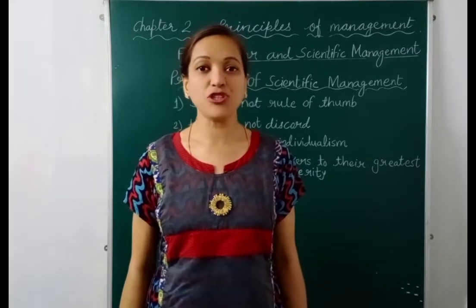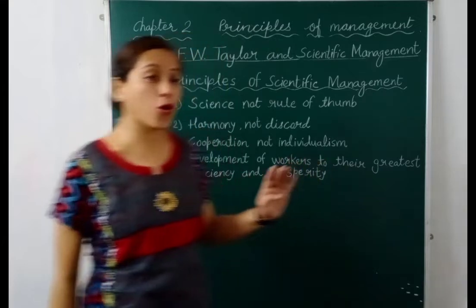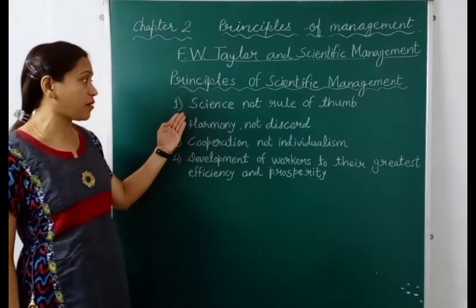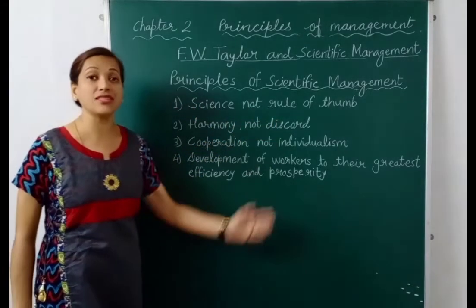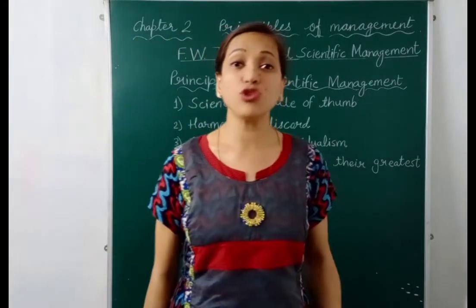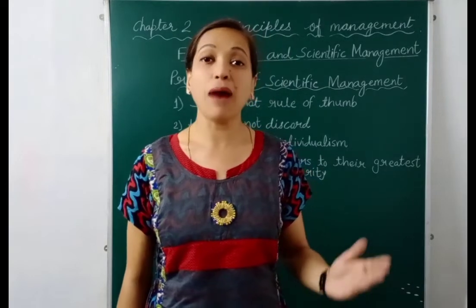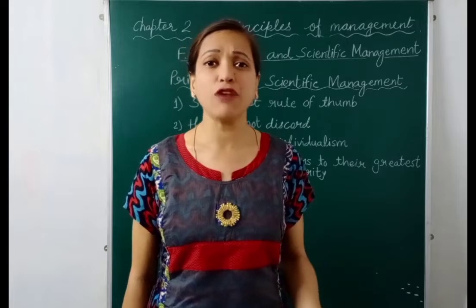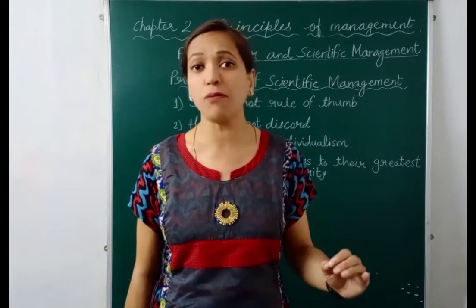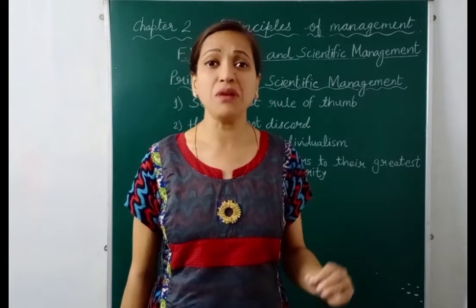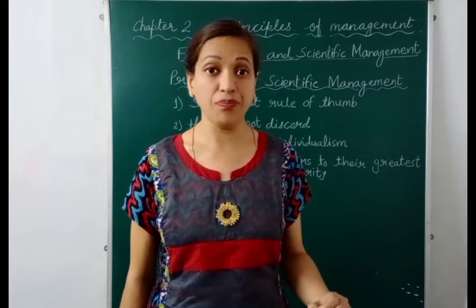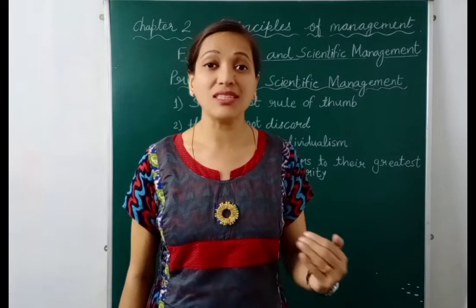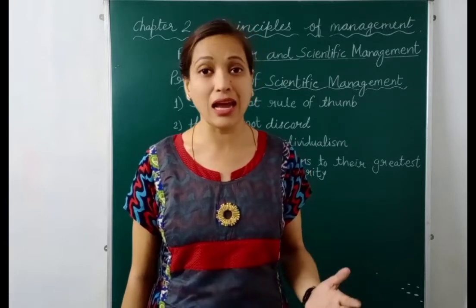Taylor's scientific management is based on four principles. The first principle is Science, not Rule of Thumb. Rule of thumb means trial and error method. When there was no scientific method, managers were using trial and error. But Taylor said that for each and every small part of the work, there should be a scientific standard method. Managers can implement such methods by doing scientific study and logical analysis.